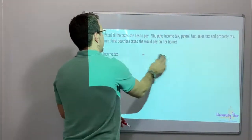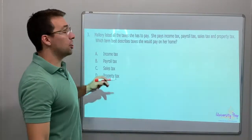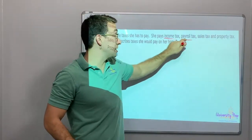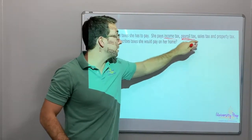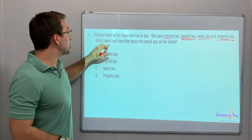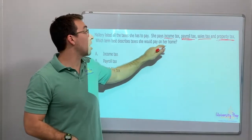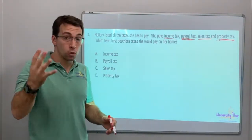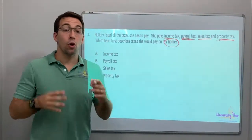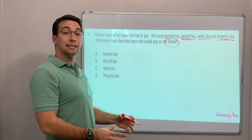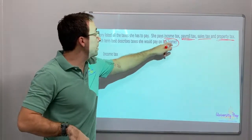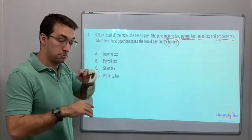Number three: Mallory listed all of the taxes she has to pay. She pays income tax — she's a boss, she's an owner of a business. She pays sales tax and property tax. She pays all four. Which term best describes the taxes she would pay on her home? So she pays all four types of taxes. Her home is on a piece of property — it might be small in a city or big in the country. Your home is property tax.